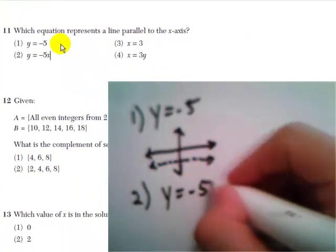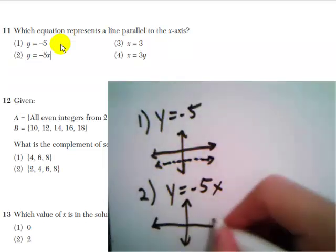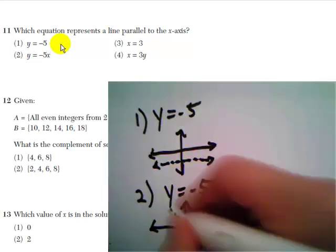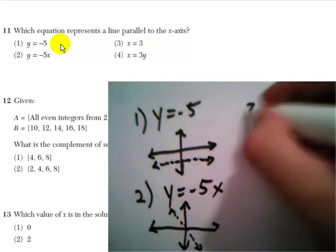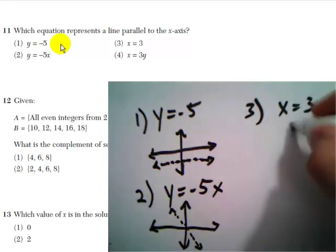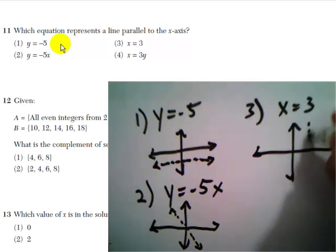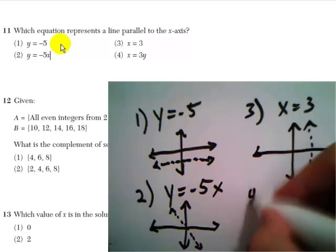y equals negative 5x is actually a diagonal line that goes through the origin. Number 3, x equals 3. When you have an equation where x equals some constant, that's actually going to be a straight up and down vertical line. Sorry if my lines aren't straight here. I think you get the idea.